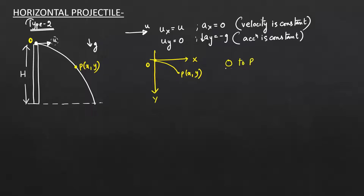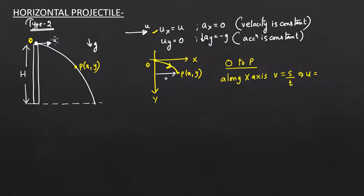Applying equations from O to P along the x-axis: since velocity is constant, we use v = s/t. The velocity along x is always u, and the displacement along x is x, so u = x/t. Therefore, time t = x/u. Call this Equation 1.